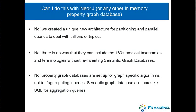Regular property graph databases are not really architected for partitioning and parallel queries at the scale of trillions of triples. There's also no way to take all those medical taxonomies published as semantic data and link them into a property graph database. Property graph databases work really well when you do graph analytics that fit in memory, but when the basic thing you're doing is integration of information, you need semantics to help with that.